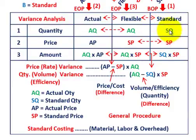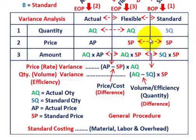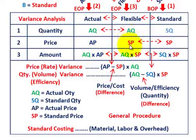So: actual quantity times actual price equals your actual amount; actual quantity times standard price equals your flexible amount; standard quantity times standard price equals your standard amount. You have to calculate that for materials, labor, and overhead. For the price or rate variance, that's comparing your actual results versus your flexible amount. The common factor you can factor out is actual quantity — the difference is between your actual price and standard price. So: (actual price minus standard price) times actual quantity is your price or rate variance.